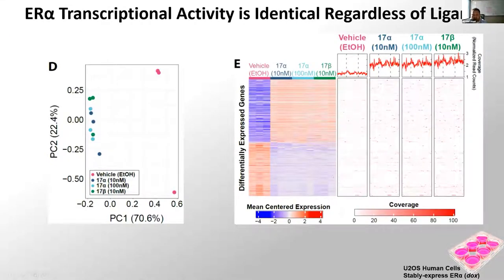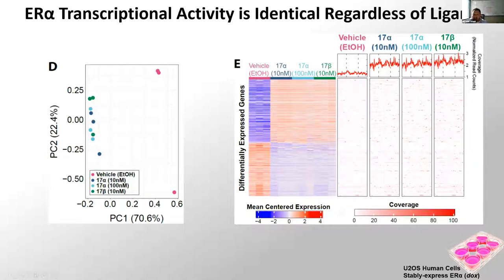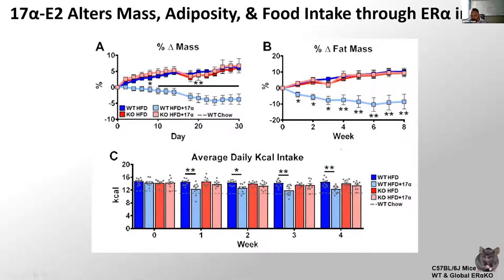When we look at specific binding motifs, the common estrogen-related response elements come up — including EREs, estrogen-related receptor response elements, and steroidogenic factor 1 — and they are essentially identical regardless of ligand or dose. We repeated this with transcriptomics and found that all treatment samples cluster together away from vehicle; the differentially expressed genes, both upward and downward, are again essentially identical regardless of dose or ligand. The take-home point is that there is no difference in genomic activity through ER-alpha whether you use 17-alpha or 17-beta as your ligand.